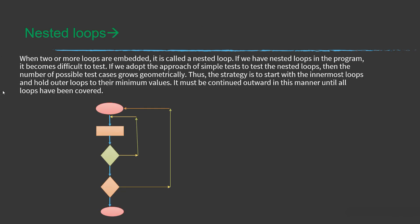Nested loops occur when two or more loops are embedded inside each other. If we have nested loops in the program, it becomes difficult to test. If we adopt the simple loop approach to nested loops, the number of possible test cases grows significantly. The strategy is to start testing from the innermost loop while holding outer loops at their minimum values, then continue outward until all loops have been covered. In simple terms, it is a loop inside another loop, and there can be a finite number of loops nested within.